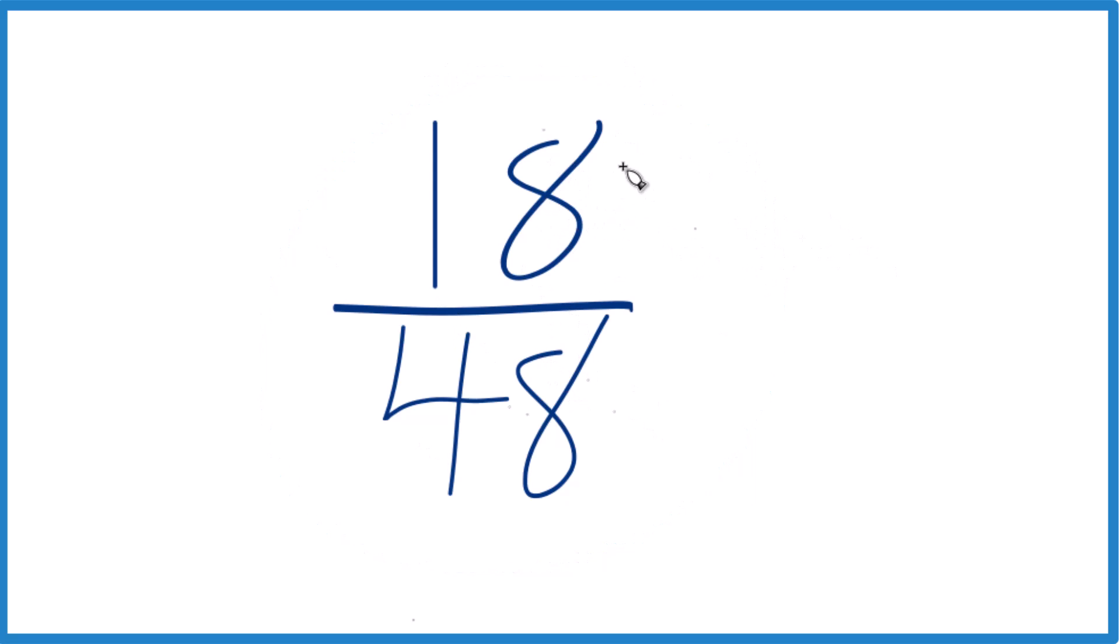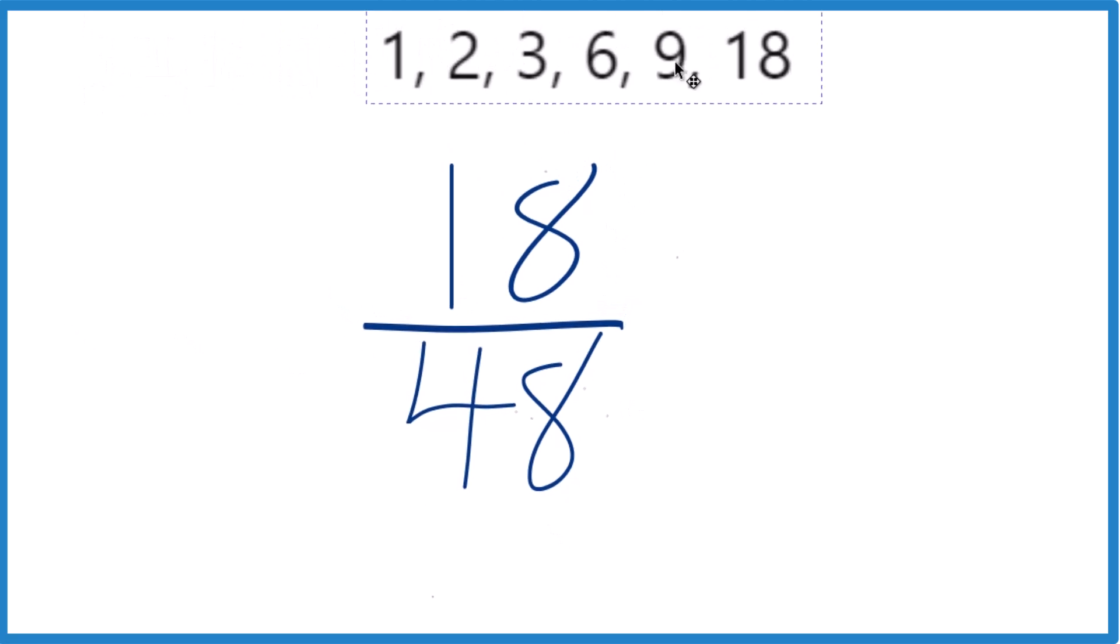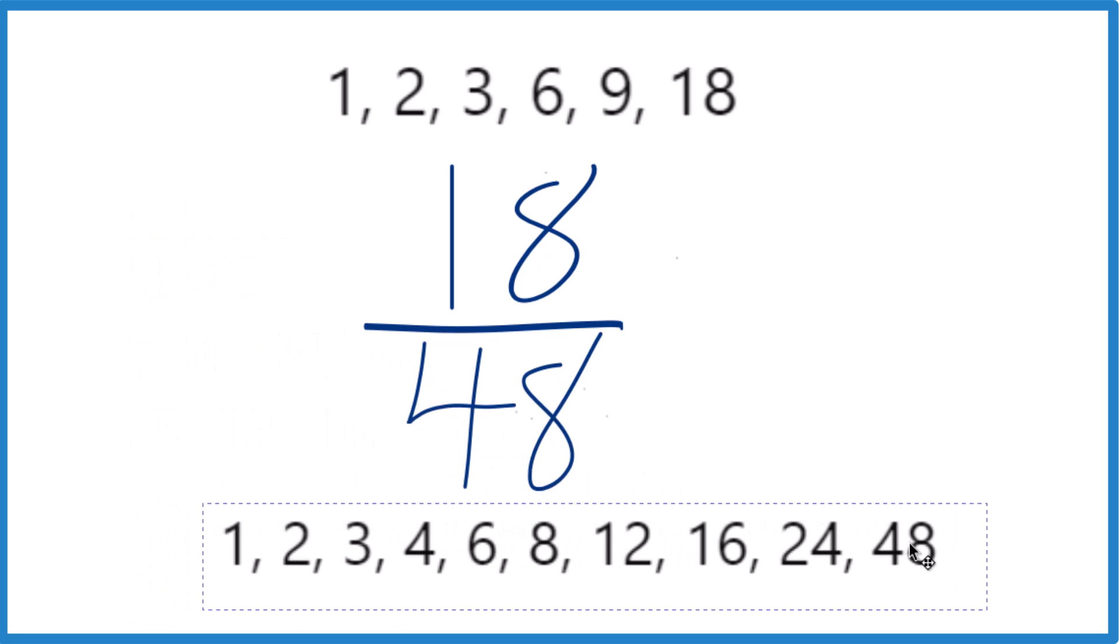So we need to find the factors of both 18 and 48. For 18, these are the factors: 1 times 18, 2 times 9, 3 times 6. For 48, there are a bunch of factors.